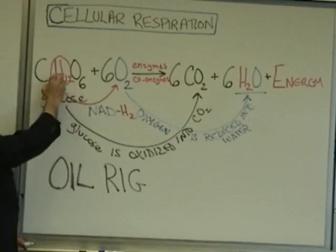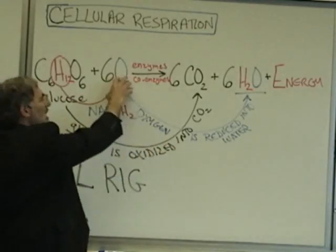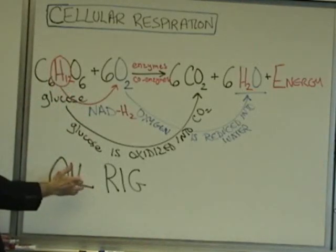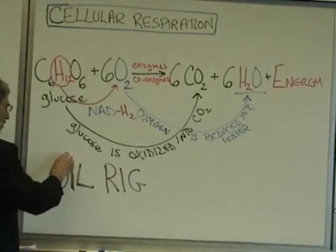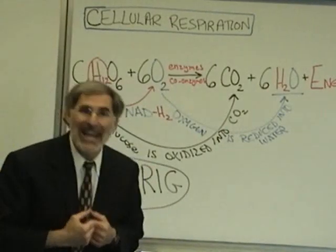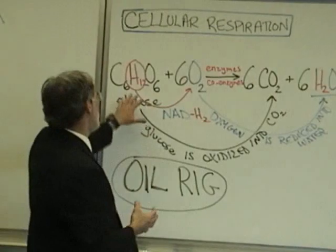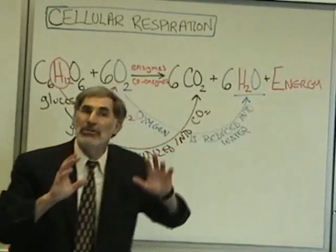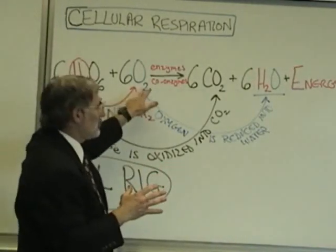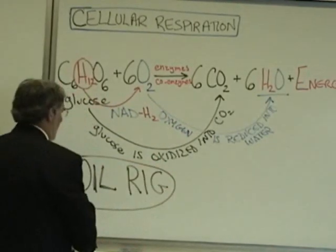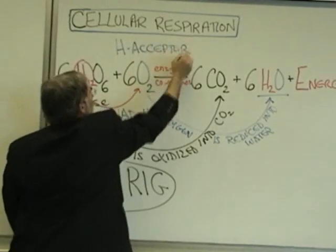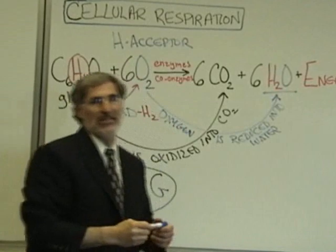So who is losing hydrogen atoms and electrons? The sugar molecule — glucose. Who is gaining these hydrogen atoms? Oxygen. As it gains these hydrogen atoms and electrons, it is being turned into water. Oxidation is a loss of hydrogen atoms and electrons; reduction is a gain. Or remember the expression OIL RIG. The role of oxygen is that it acts as a hydrogen acceptor — it accepts the hydrogen atoms as the sugar is broken apart. That's why you inhale oxygen.